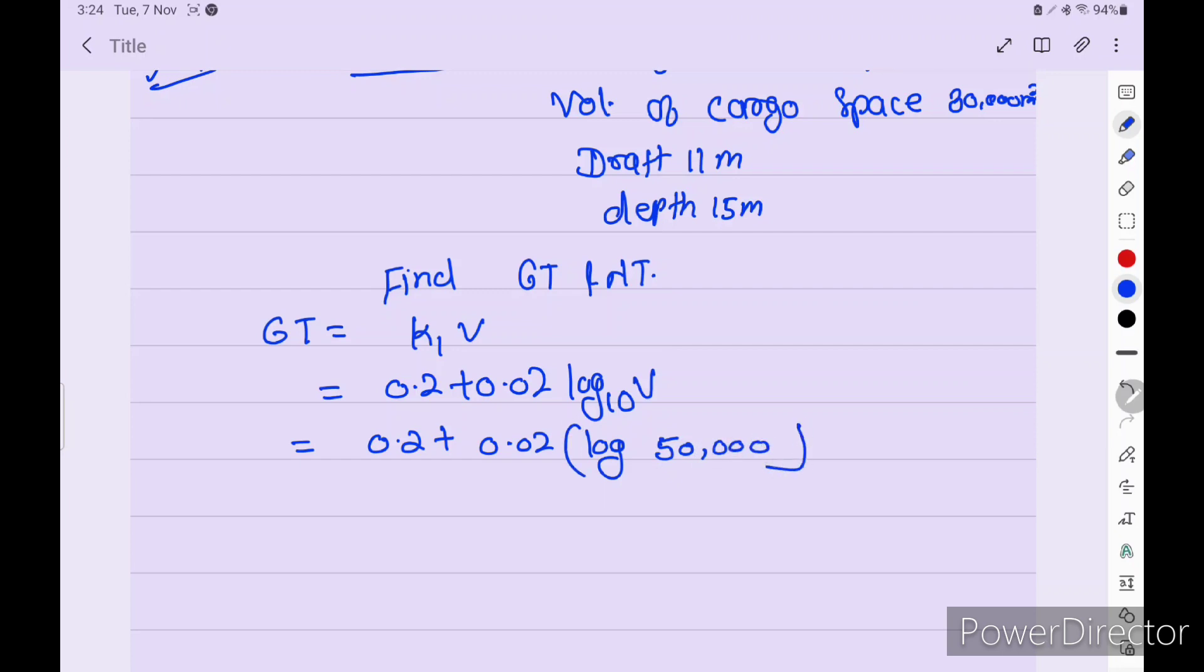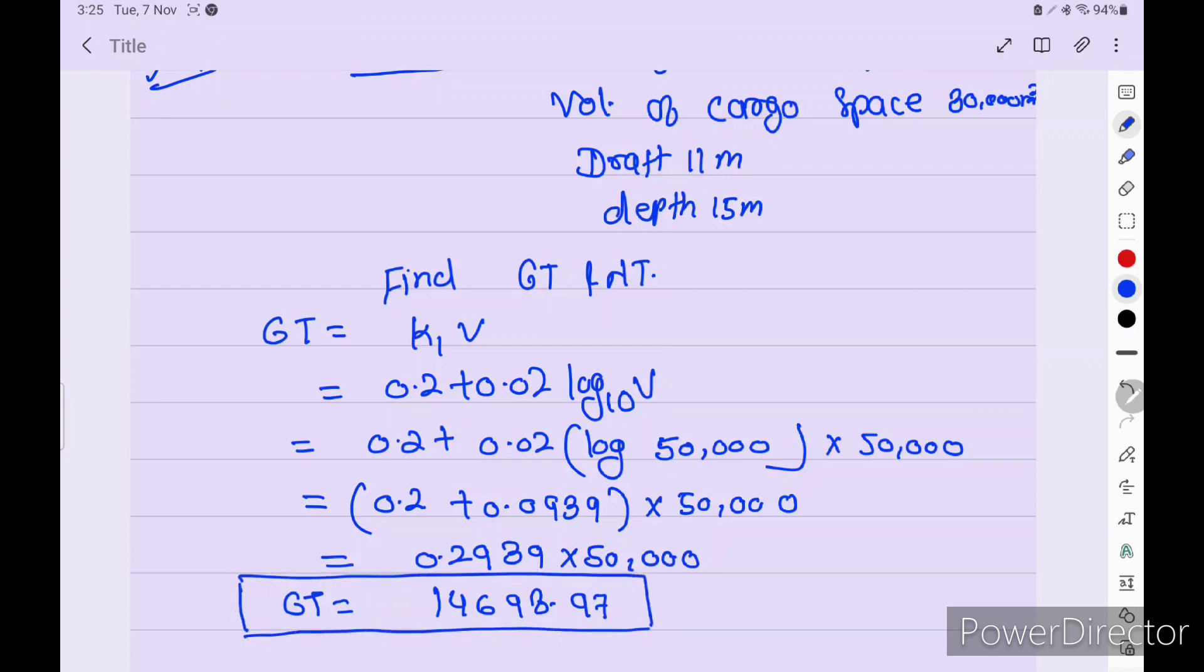When you are putting in the calculator, no need to put log 10, just press the log and then 50,000, times 50,000 of V value. So we get 0.2 plus 0.0939 into 50,000, so we get 0.2939 into 50,000. Gross tonnage is equal to 14,698.97.